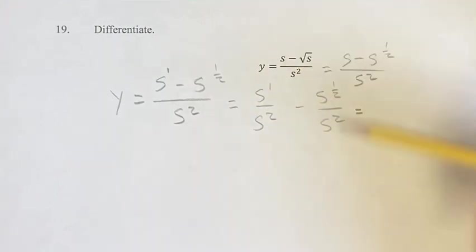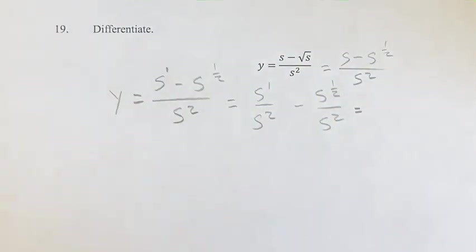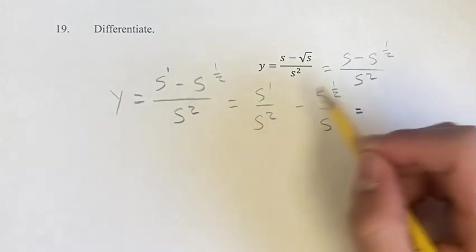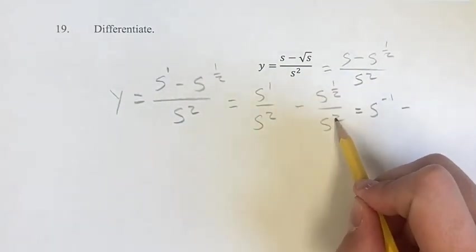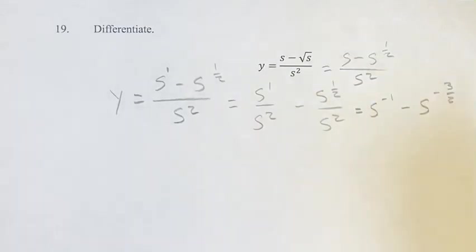Going through here, using the quotient rule, not the quotient rule for derivatives, but just the quotient rule for exponents, we get s to the 1 minus 2 is s to the negative 1, minus s to the 1 half minus 2 is s to the negative 3 halves.